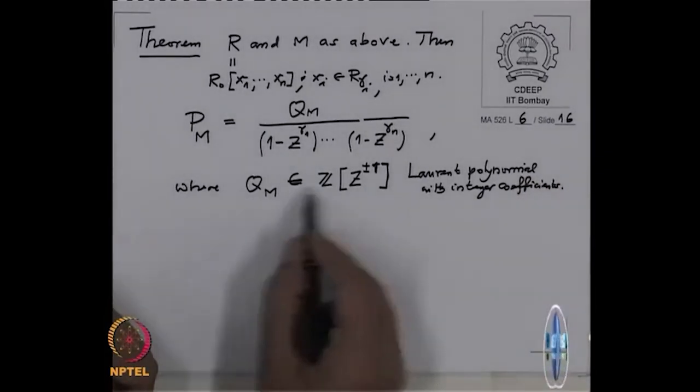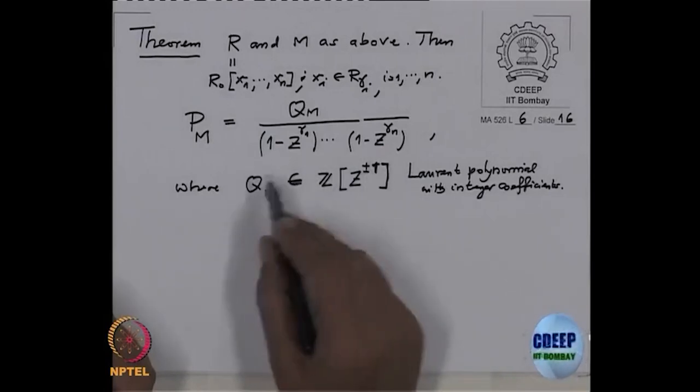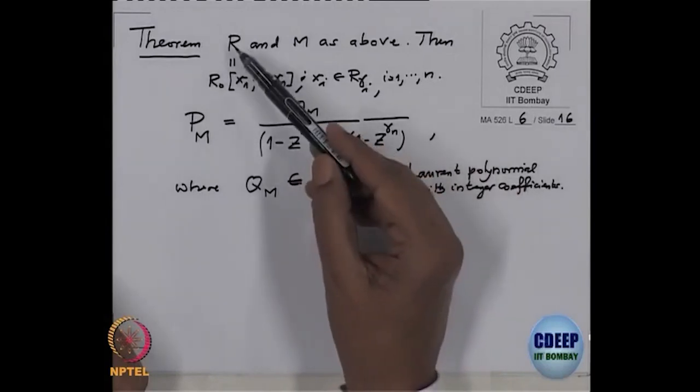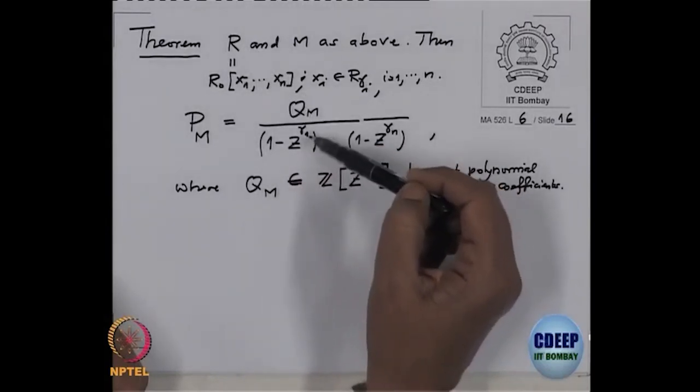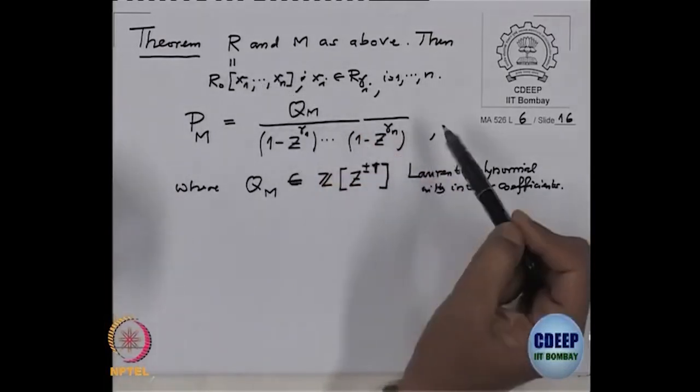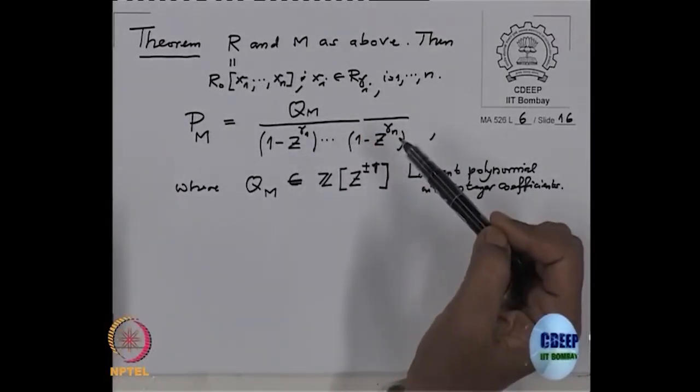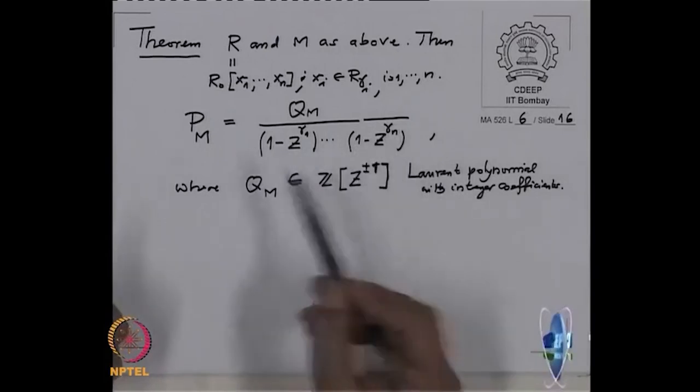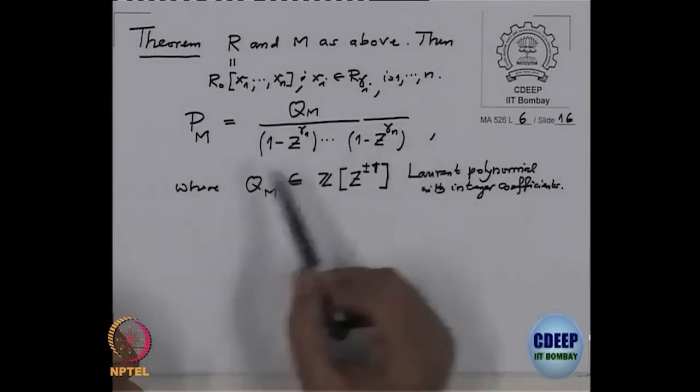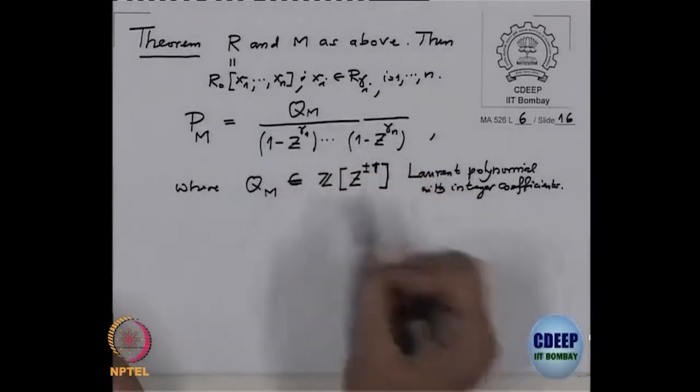So Laurent polynomial, the denominator is nice. So in particular, when for example, when you want to do it for R, and suppose your polynomial ring then all the gamma's are 1, so it will be (1 - Z) to some power, if all gamma's were 1. So we will prove this next time and deduce consequences from here. Proof next time.